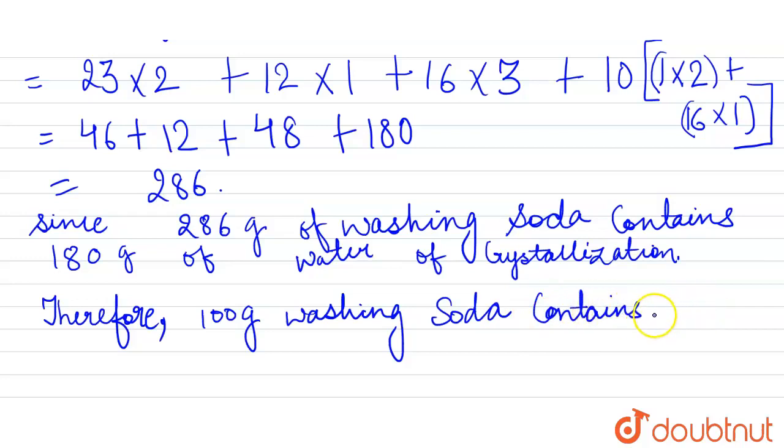Therefore, 100 grams of washing soda contains is equal to 180 by 286 multiplied by 100. 180 is for the crystallization of water and total mass of the washing soda is 286. So we have to divide by 286 and find out for the 100 grams of soda.